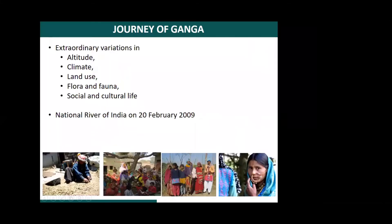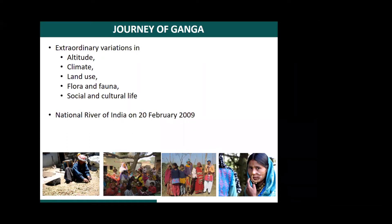This has resulted in extraordinary variations in altitude — from about 6,000 to 7,000 meters in the Himalayas down to sea level. Because of that, there is wide variation in climate, and because of these two factors, there is wide variation in land use. Flora and fauna are obviously different in these different zones, and human lifestyle is woven around land use, climate, and altitude. That's why social and cultural practices also vary as you pass from the Himalayas to the Bay of Bengal. The Ganga river was declared a national river on 23 February 2009.